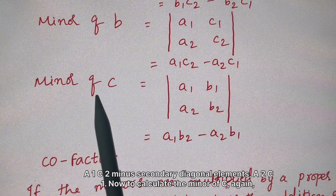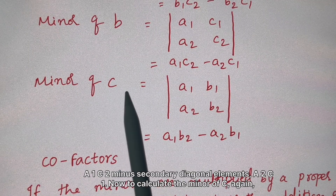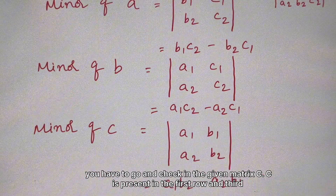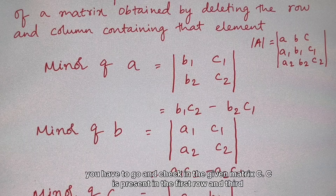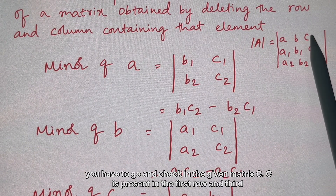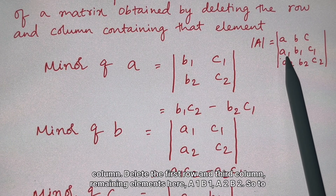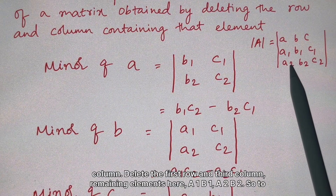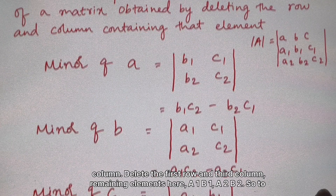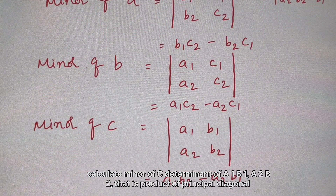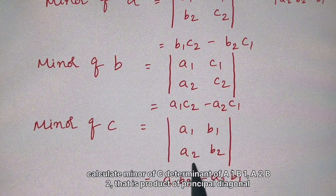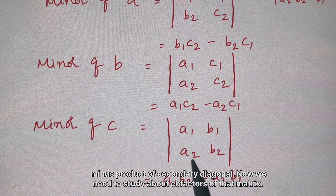To calculate the minor of 'c': 'c' is in the first row and third column. Deleting that row and column, the remaining elements are [a1, b1; a2, b2]. So the minor of C is the determinant of [a1, b1; a2, b2], that is the product of the principal diagonal minus the product of the secondary diagonal.